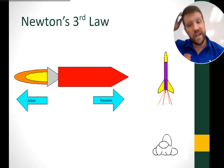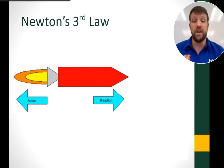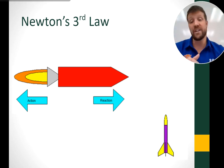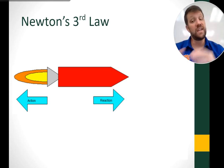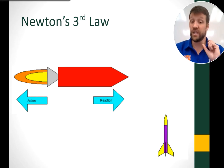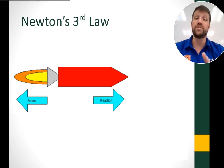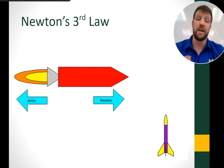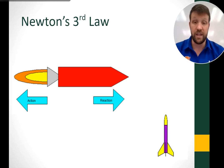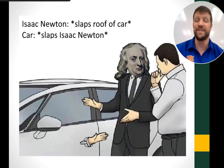Here's a rocket example. We light the engine — that's our action. The reaction is a force equal to what the rocket engine produces, pushing in the opposite direction. Because the engine is inside the rocket, that force causes the rocket's mass to accelerate — F = ma in action. As Newton would say, it slaps him right back — equal and opposite.